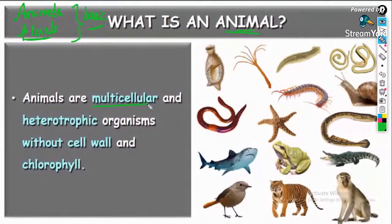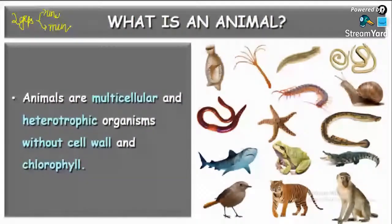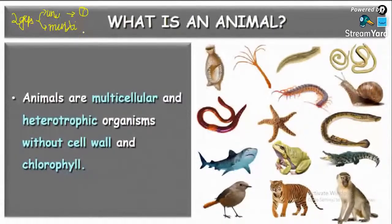Animals are multicellular and heterotrophic organisms. There are two groups of organisms: unicellular organisms and multicellular organisms. Unicellular organisms have only one cell — for example, amoeba and paramecium. Multicellular means more than one cell. Animals are multicellular.